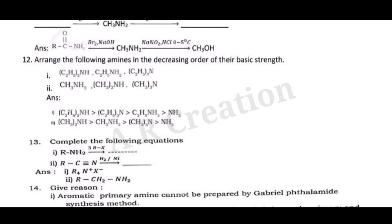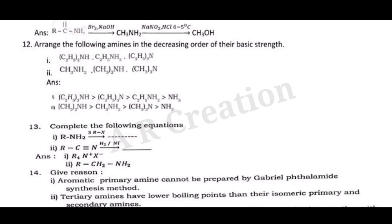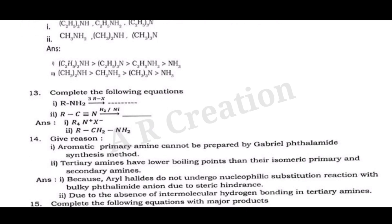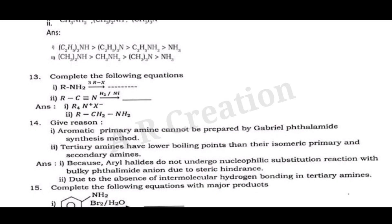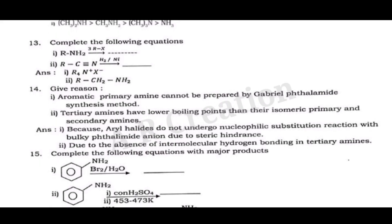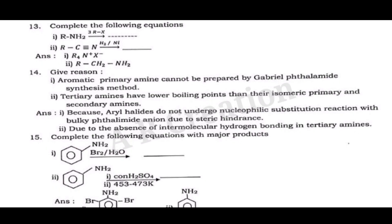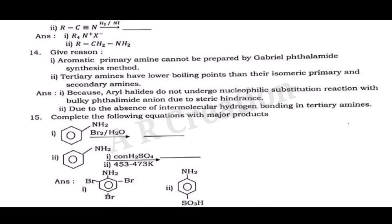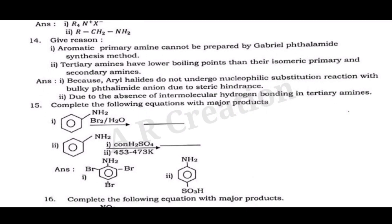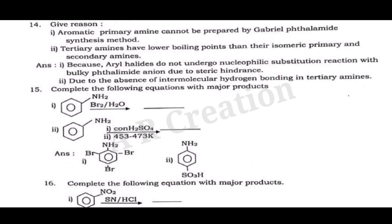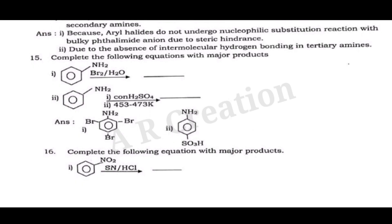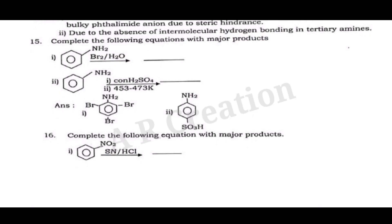Question 12: Arrange the following amines in the decreasing order of their basic strength. Question 14 — Give reason: (i) Aromatic primary amines cannot be prepared by Gabriel phthalimide synthesis method, because aryl halides do not undergo nucleophilic substitution reactions with the bulky phthalimide anion due to steric hindrance. (ii) Tertiary amines have lower boiling points than their isomeric primary and secondary amines, due to the absence of intermolecular hydrogen bonding in tertiary amines.